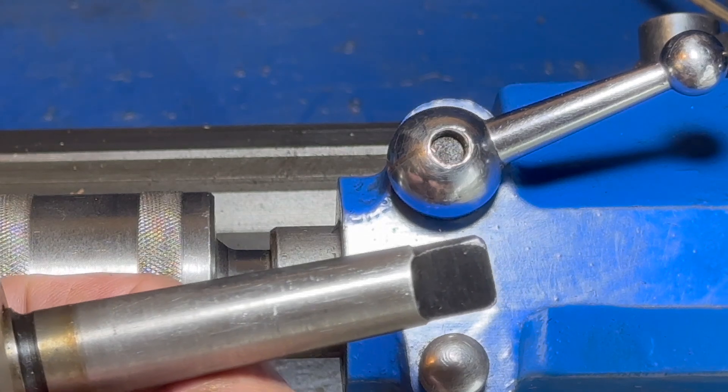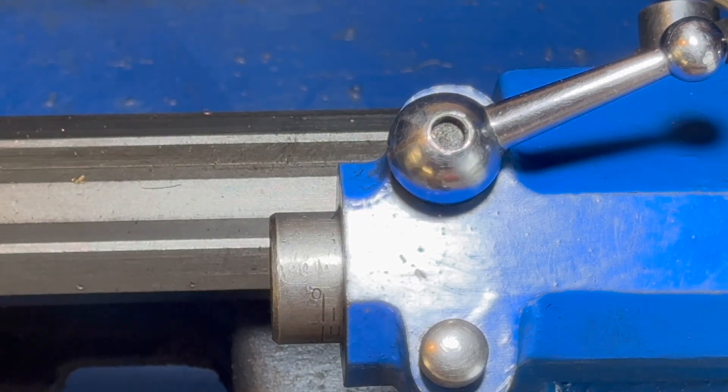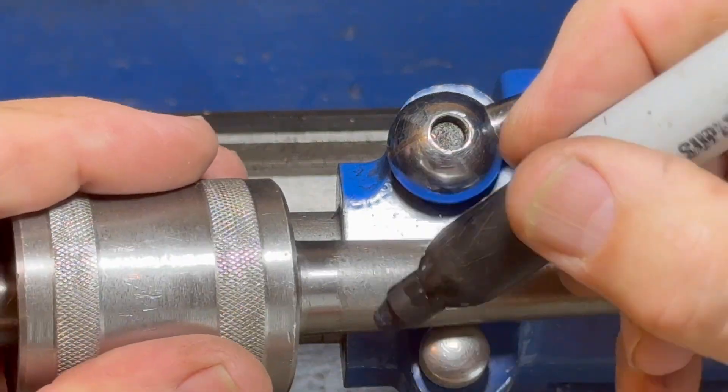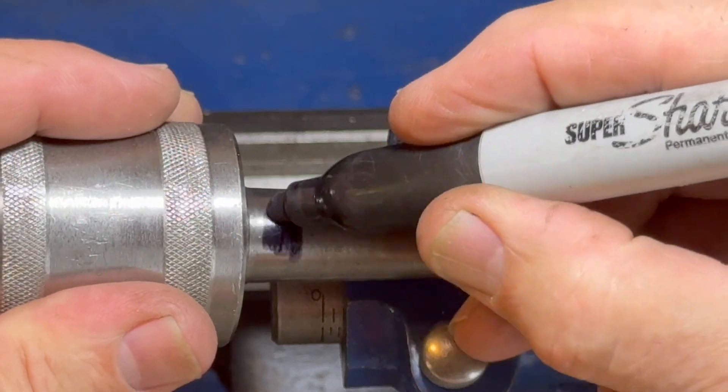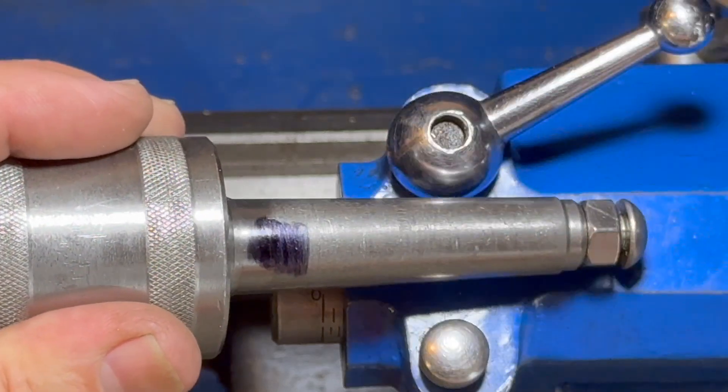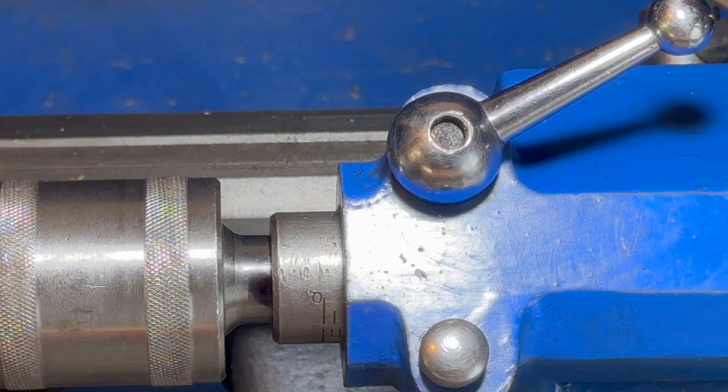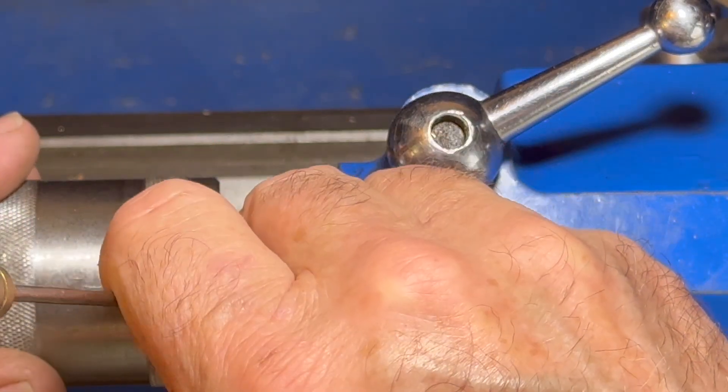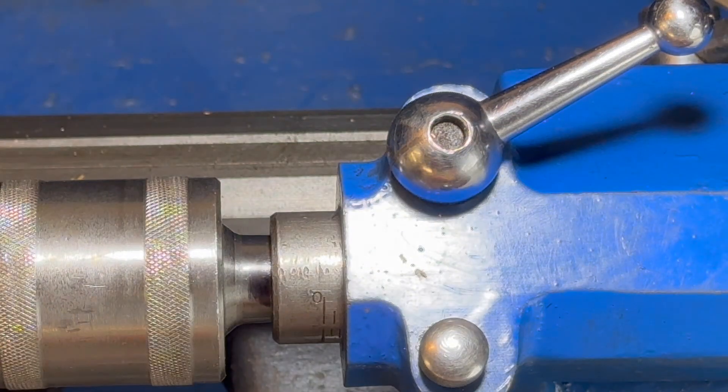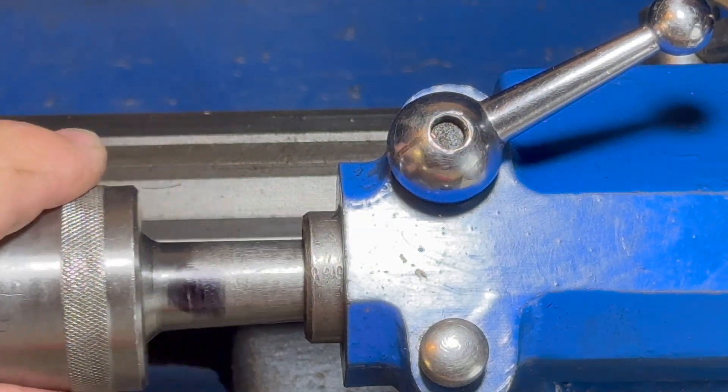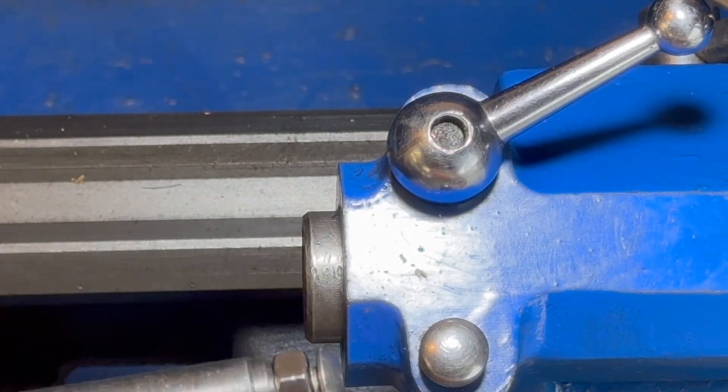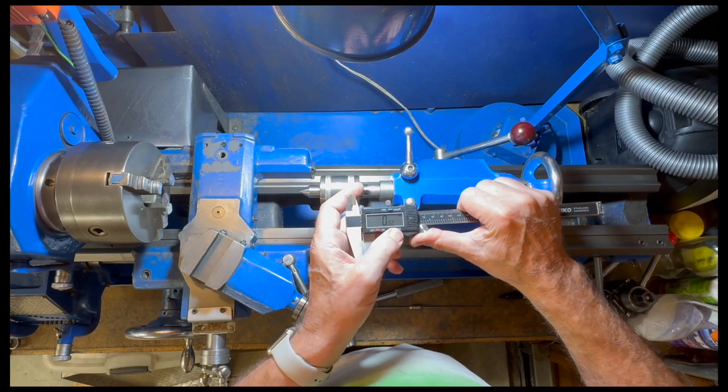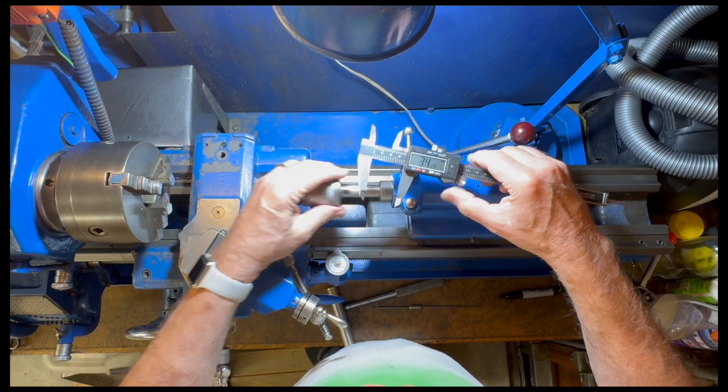The question now is how much do I need to take off? I'll make a mark on the Morse taper with a felt tip pen, put it in the chuck and see how far it goes in. I'm going to scribe a line across that felt tip mark. So that's my reference point for the beginning of the quill. The next thing I need to do is measure it.